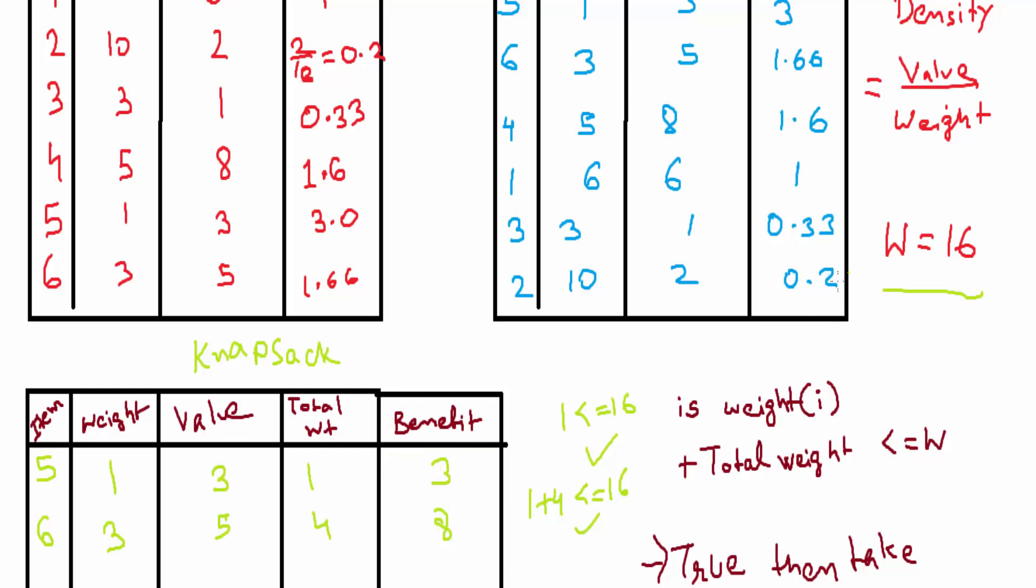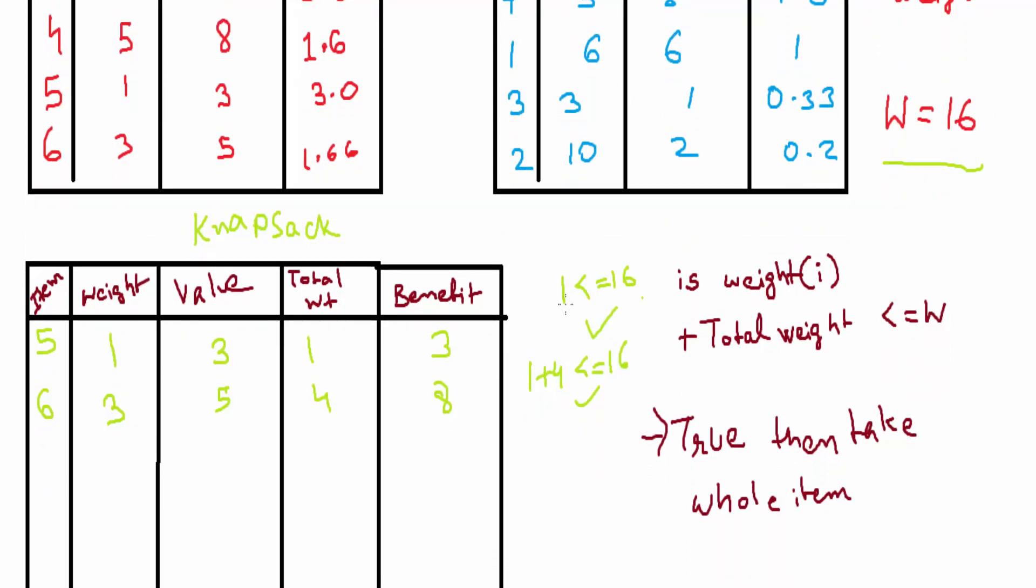Next item we need to add is 4. Item 4, its weight is 5, its value is 8. Let us see, 5 plus 4, the total weight is 9. 5 plus total weight 4, that is less than or equal to 16. Yes, it is true. So we'll take the whole item. It was 8 plus 8, that equals 16.